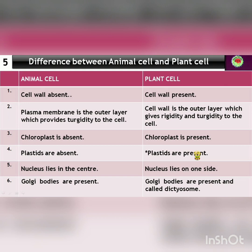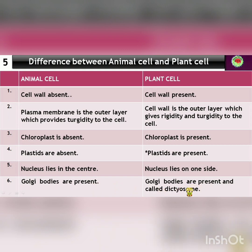The fifth point: in animal cell, the nucleus lies in the center, while in plant cell the nucleus lies on any one side of the cell. The sixth point: Golgi bodies are present in animal cell, and Golgi bodies are also present in plant cell but they are called dictyosome. For exams, if asked what is a dictyosome, don't be confused — dictyosome is also called Golgi bodies.